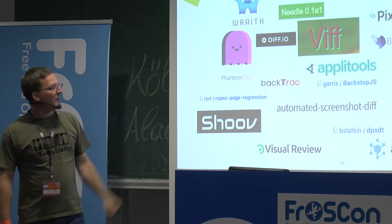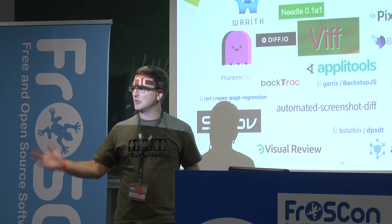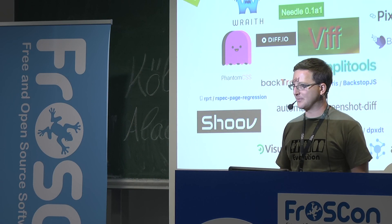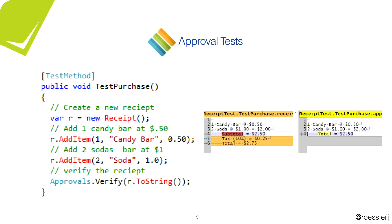Pixel diff is fragile though. If you create the golden master on your local machine and load it to the server, the server probably has a different operating system and you get differences. There are other alternatives. TextTest works in Python and turns everything into a text file — you have a screen scraper that scrapes your screen and converts it to text for comparison. Or there's ApprovalTests: you call approvals.verify and pass a file, string, or whatever, and it gives you golden master testing.